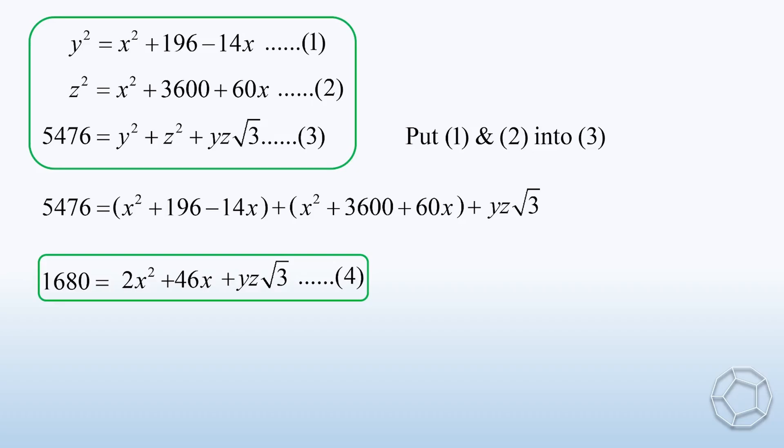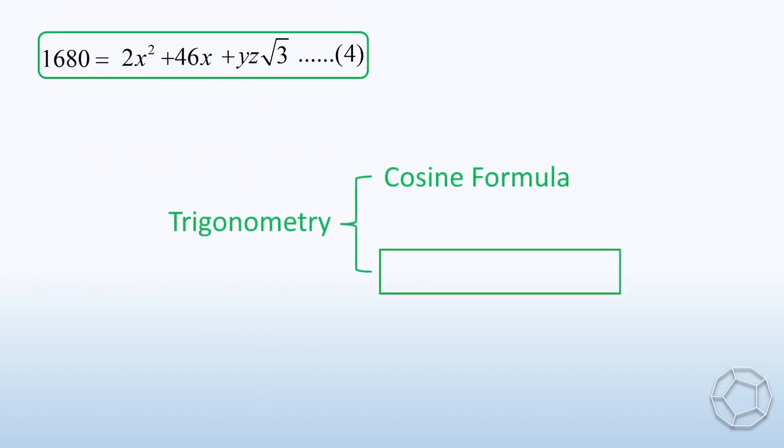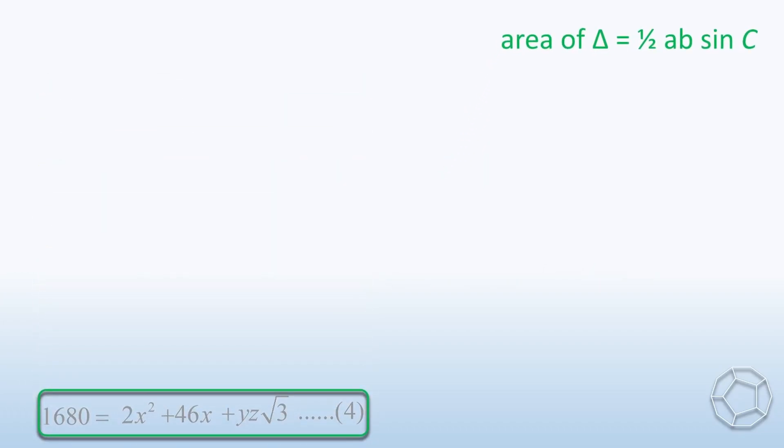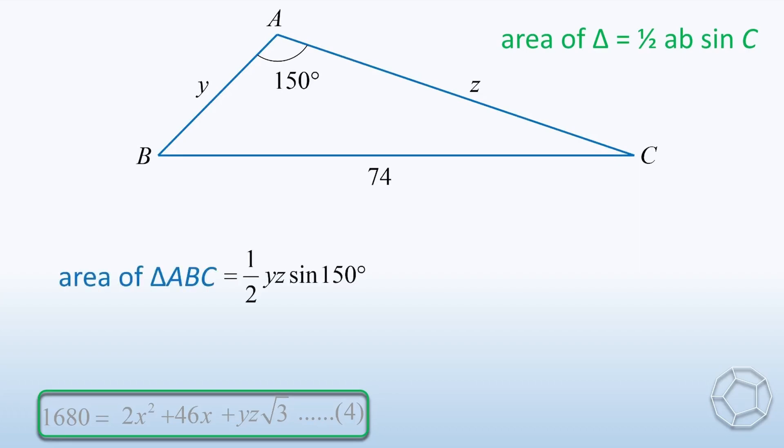Well, it's not nice enough because the right-hand side is still in 3 unknowns X, Y, and Z. In particular, we have the cross term Y times Z. How do we deal with it? Here comes the second tool, which is the formula of area of triangle, 1 over 2 AB sine C. This formula looks good in our situation. Let's go back to the figure and see why it is the case. If we look at the blue triangle again, the area is equal to 1 over 2 times YZ sine 150 degrees. This is the cross term Y times Z we are looking for. Moreover, sine 150 degrees is equal to 1 over 2. So, the area is simplified to 1 over 4 times Y times Z.